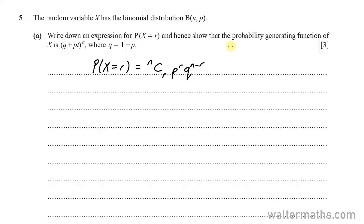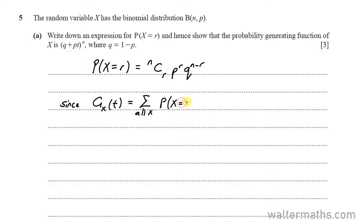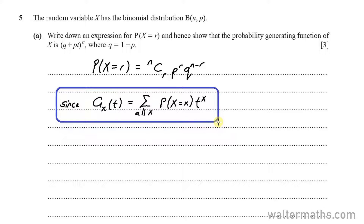We need to show that the probability generating function of X is Q plus PT to the power of N, where Q is 1 minus P. Now we know already that the probability generating function G_X of T is found by the sum for all values of X of P(X = x) times T to the power of X. We have already learned this in previous lessons.